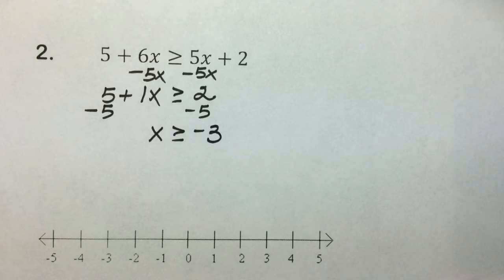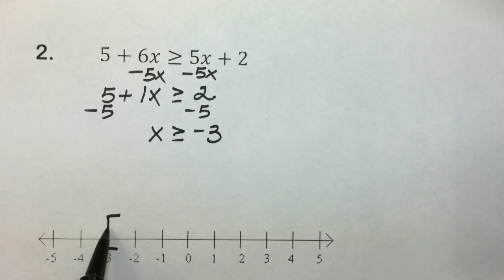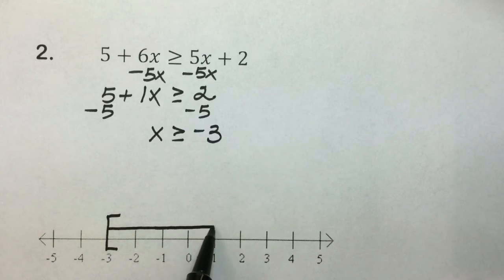Graphically, we are including negative 3 in our solution here. So to indicate that, we'll use a bracket. We want x values that are greater than or equal to, so our solution will be indicated by the line with the arrow indicating it continues towards positive infinity.